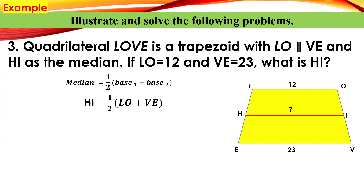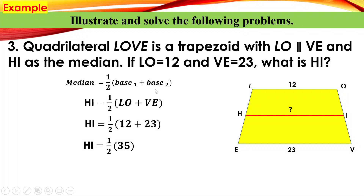Since HI is the median, it equals one-half of the measurement of LO plus VE. Substituting: one-half times (12 plus 23). HI equals one-half of 35, since 12 plus 23 equals 35. Then 35 divided by 2 equals 17.5. Therefore the measurement of the median HI is 17.5.